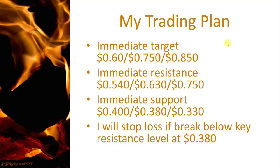My trading plan: immediate target remains the same — 60, 75, 85 cents. Immediate resistance is at 54, 63, and 75 cents. Immediate support is at 40, 38, and 33 cents. These are the critical support levels whereby we build our trading plan. I bought at 42 cents originally; it broke 40 cents, I cut at 39. I saw support around the 38 level, it rebounded and I bought back again around the same cost — still at 42 cents. I will set a stop loss if the support level breaks below 38 cents.